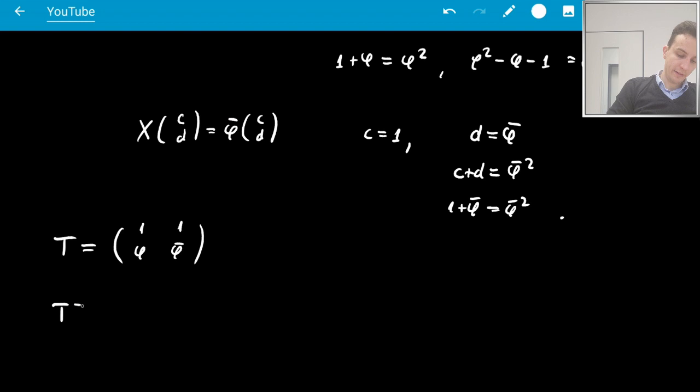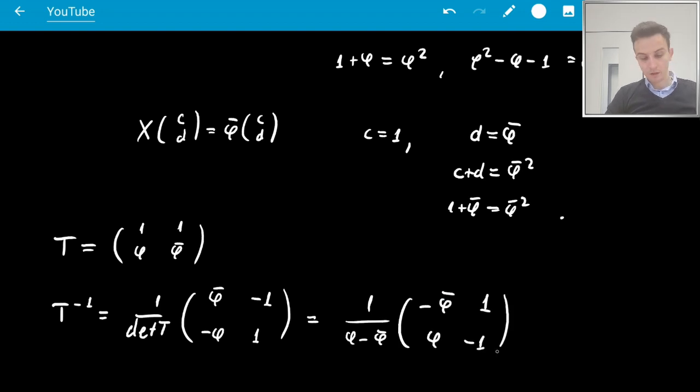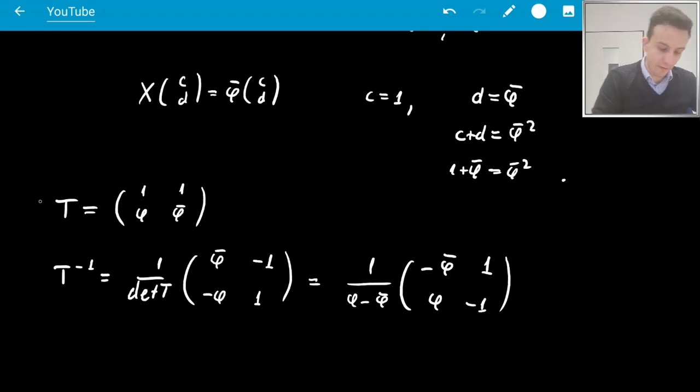We can also get T inverse, so it's the determinant of T. And then these two guys switch places. The determinant of T is what? It's phi bar minus phi. So perhaps I can switch the sign and write here minus phi bar 1, phi minus 1. Okay.